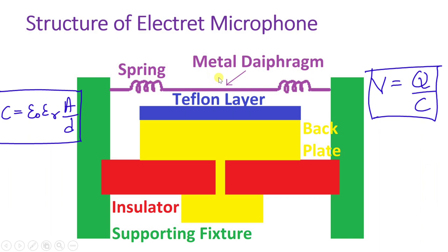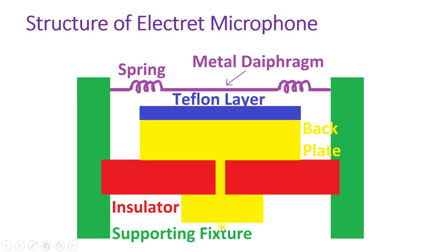This is how the complete structure works and generates an electrical signal. The electret microphone is a version of the capacitor microphone, but the key difference is it has a built-in charge provided by the Teflon layer. The Teflon layer provides a fixed charge, so we don't need any external bias supply.